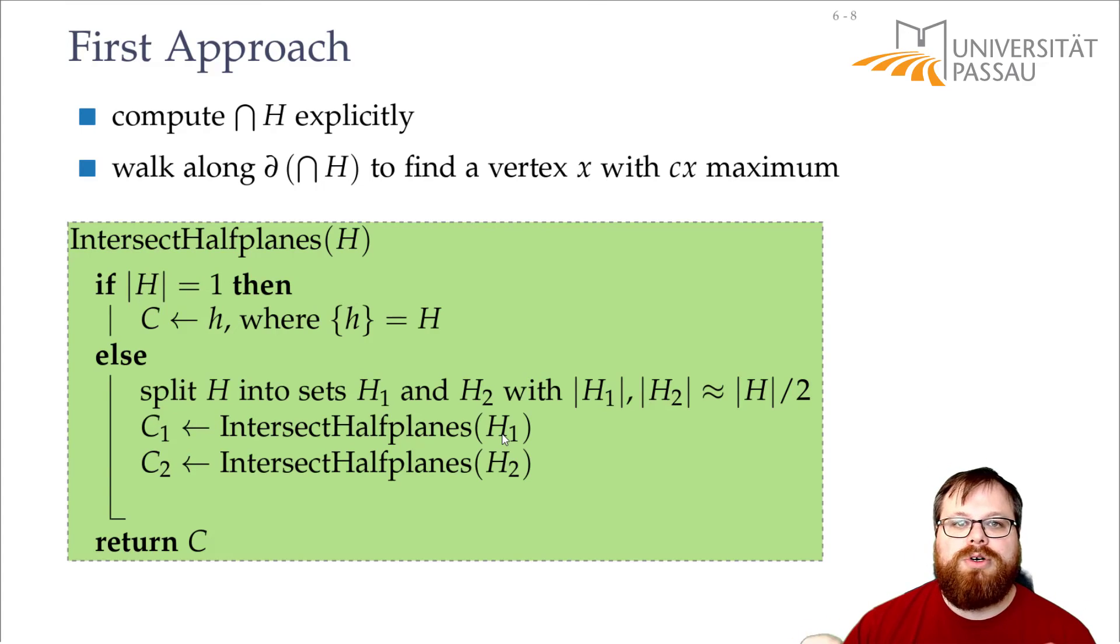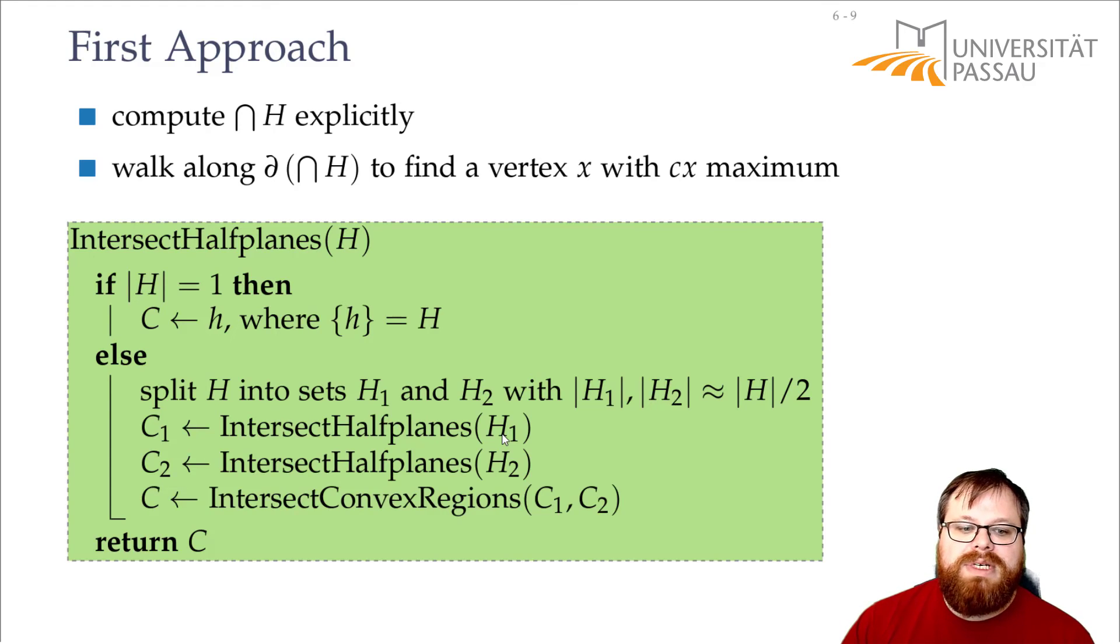Those are not half planes anymore. Those can be something unbounded, it can be a convex polygon, we don't know. But it's definitely a convex set. And that means we somehow have to intersect convex regions. Or we need some other method where we can get two convex regions and intersect them.